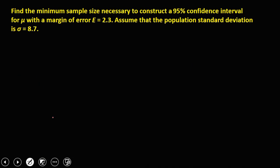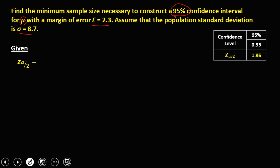So we have this problem. Find the minimum sample size necessary to construct a 95% confidence interval for the population mean with a margin of error of 2.3. Assume the population standard deviation is 8.7. First, we list all the given. For the confidence coefficient, since we have a 95% confidence level,